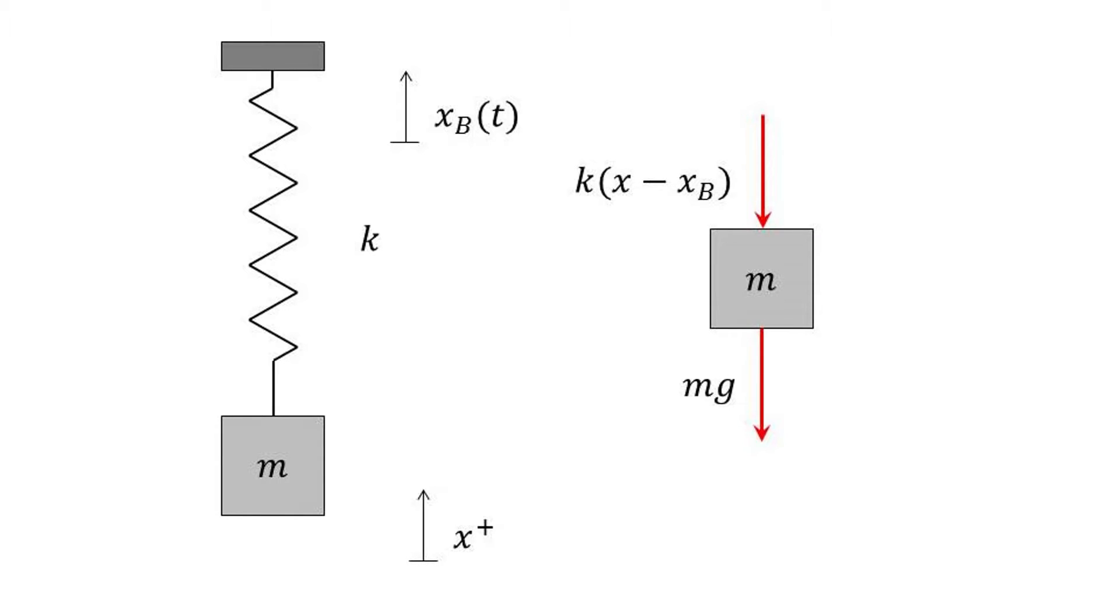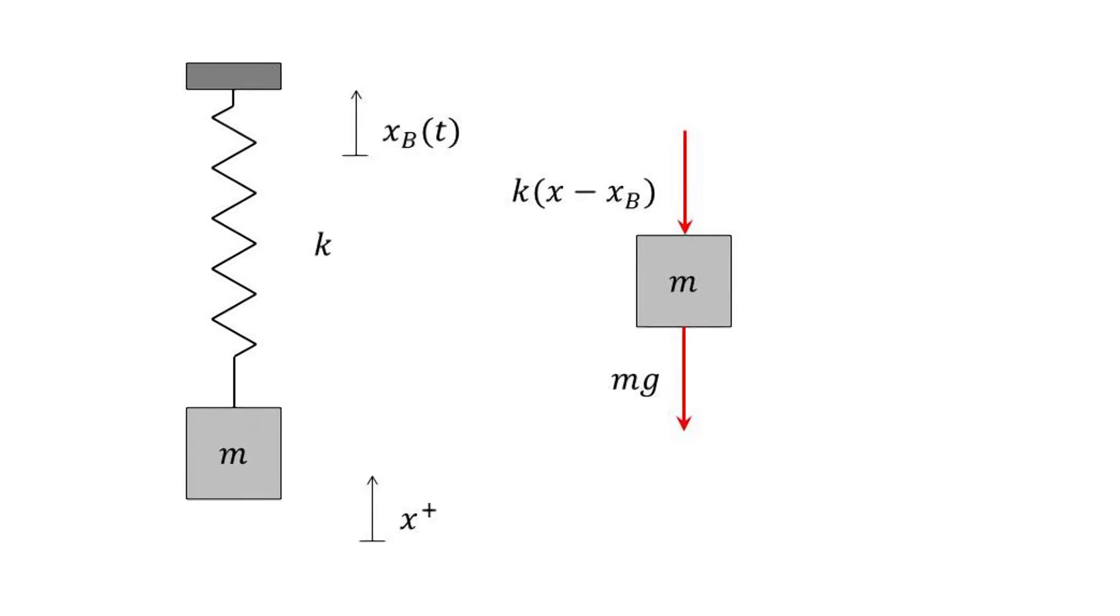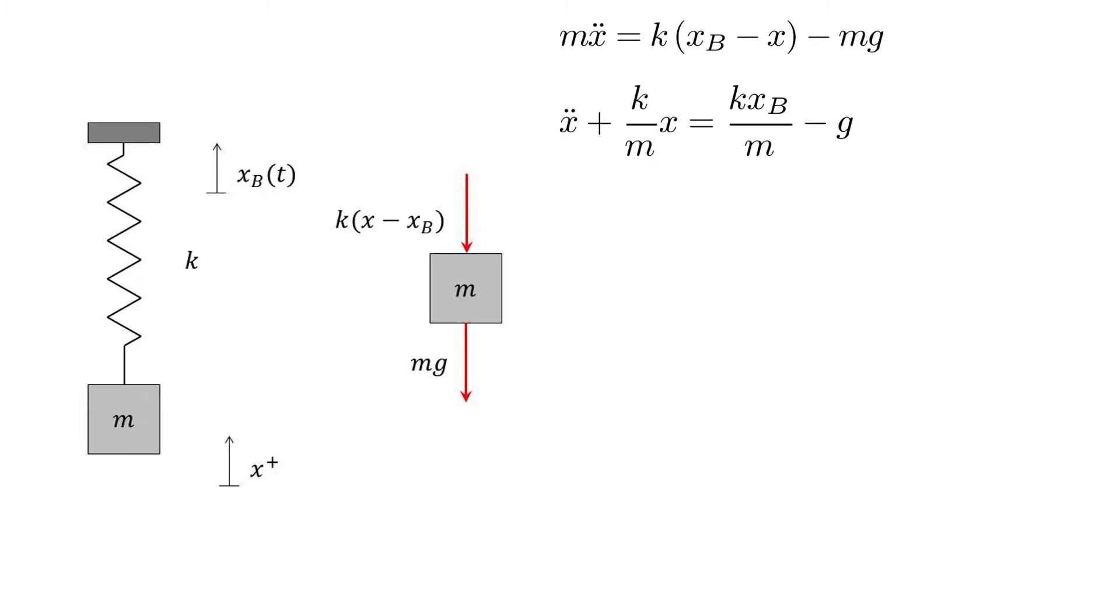We notice that the only forces on the mass will come from the spring and gravity. In order to eliminate gravity from our equation of motion, we transform our x values into z values, which are offset from x by the equilibrium displacement.